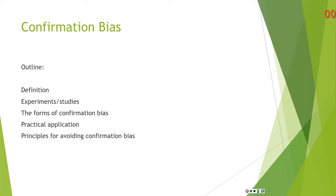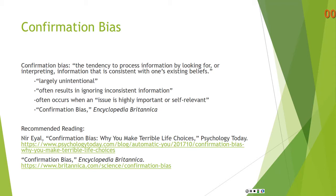Confirmation bias is the tendency to process information by looking for or interpreting information that is consistent with one's existing beliefs. It's largely unintentional. It often results in ignoring inconsistent information — that is, information that is inconsistent with your beliefs. It often occurs when an issue is highly important or self-relevant. For recommended reading, you can see the links below: 'Confirmation Bias: Why You Make Terrible Life Choices' and confirmation bias from Encyclopedia Britannica.